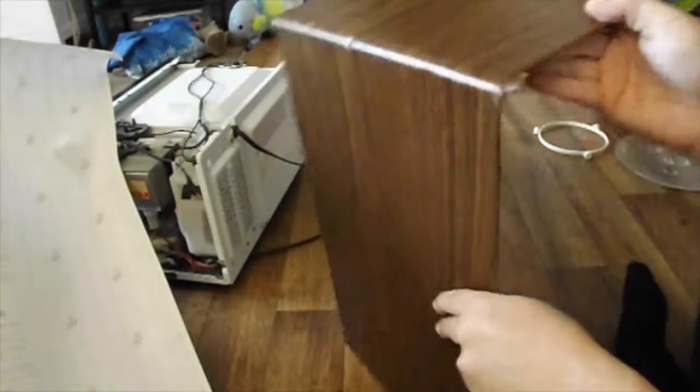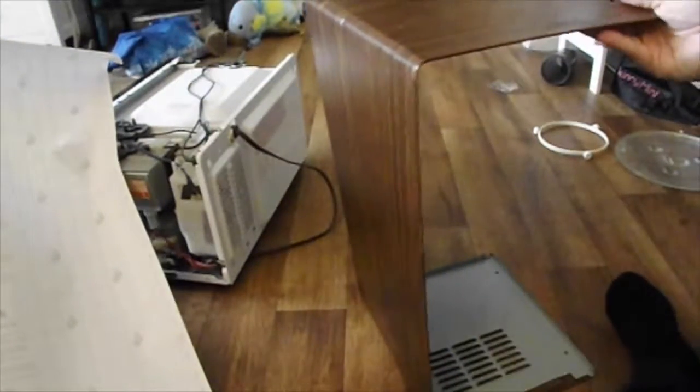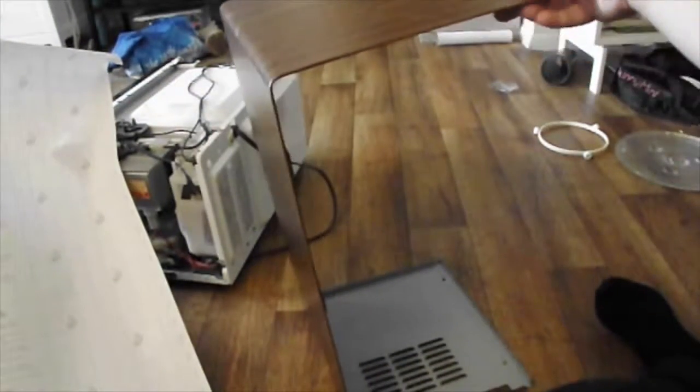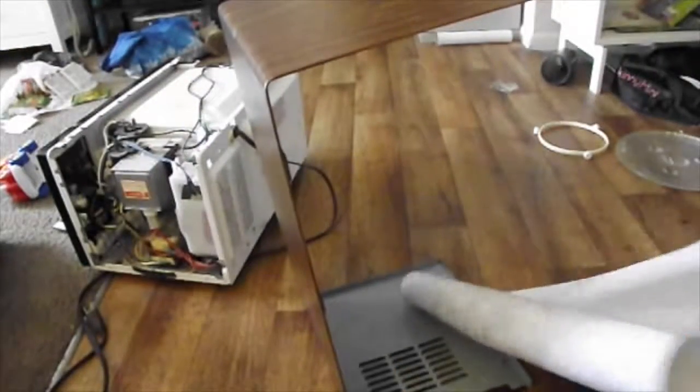All right, and then I'm just going to set this outside casing up on the side to make it a little easier to apply because we are going to move the contact paper from one side to the other to make it look like one smooth piece.